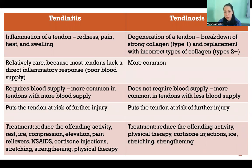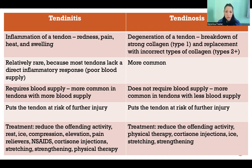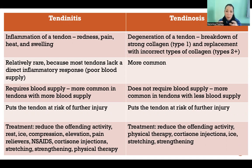When it comes to degeneration of something like a tendon or fascia, what's happening is that there's some sort of overuse taking place. You're using that tendon in the wrong way or more than you should be. What's happening is the collagen that makes up the tendon is breaking down and being replaced — that's normal remodeling.